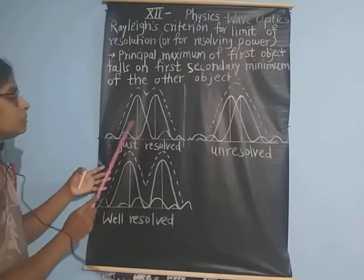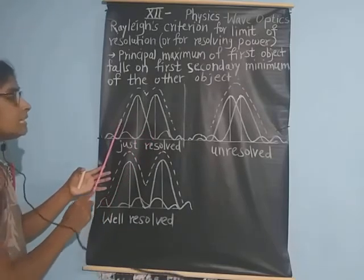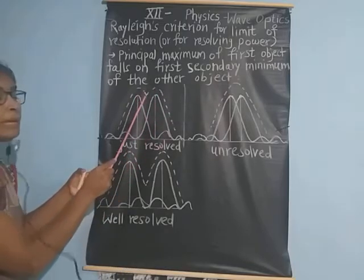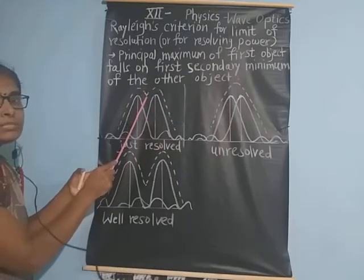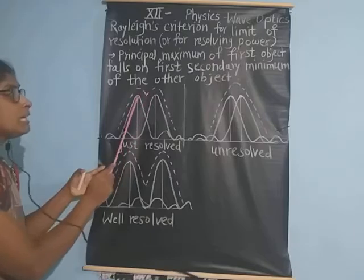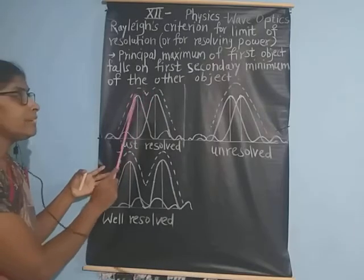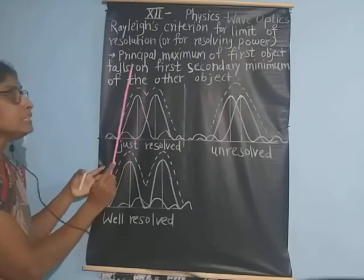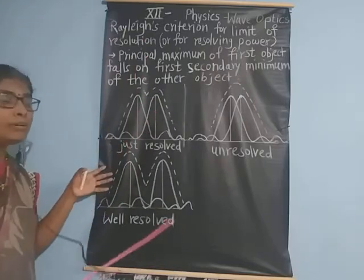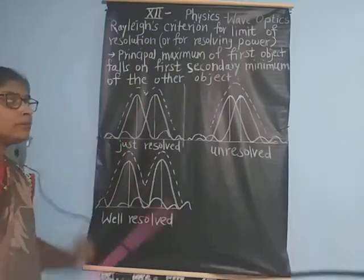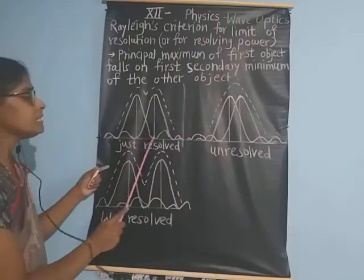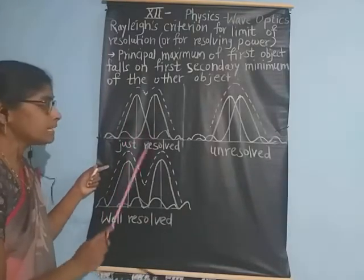The resultant pattern shows a little depression between the two peaks. This is the Rayleigh's criteria for the limit of resolution. If this distance is less, the two principal maxima are not resolved.